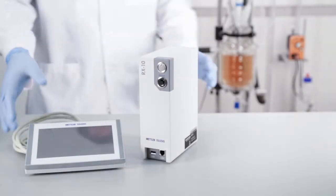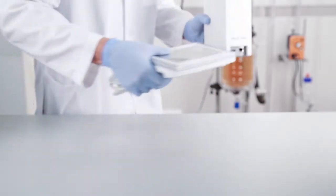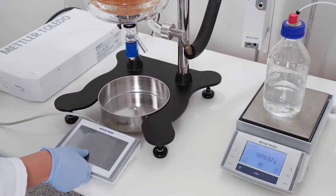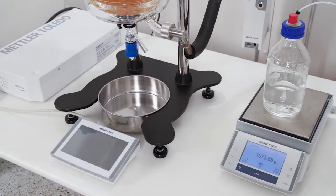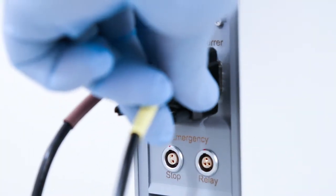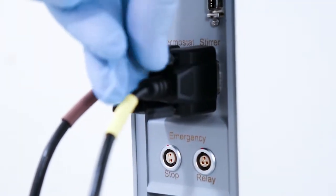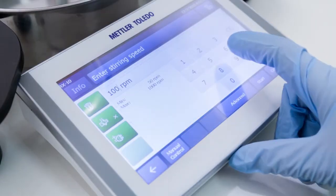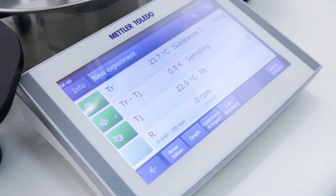RX10 enables scientists to automate their jacketed lab reactor systems for enhanced reaction control, data capture, and reporting. Plug-and-play connections allow laboratory control functions like stirring, dosing, heating, and cooling to be quickly integrated and automated, eliminating the need to learn and manage multiple control interfaces.